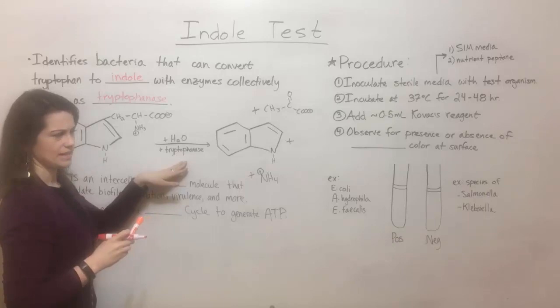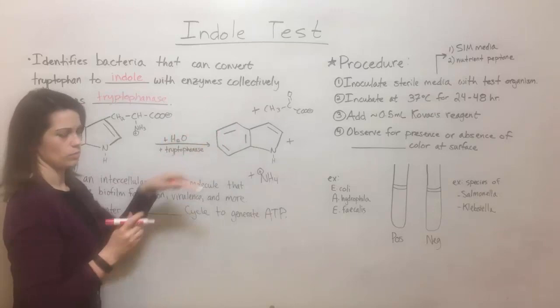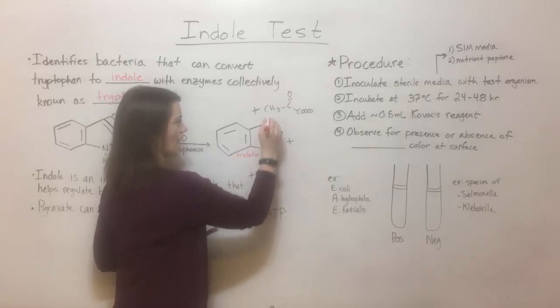So this is a kind of hydrolysis reaction, along with those tryptophanase enzymes, to break tryptophan down to get three different products. They are indole, which is this one right here, and pyruvate, and an ammonium ion.